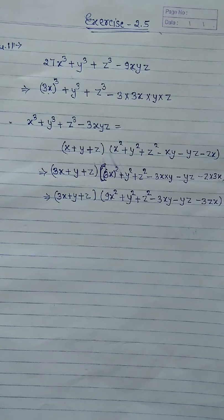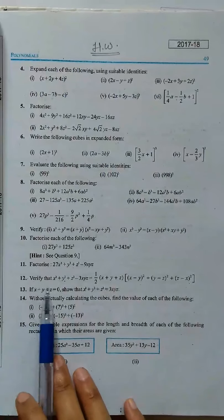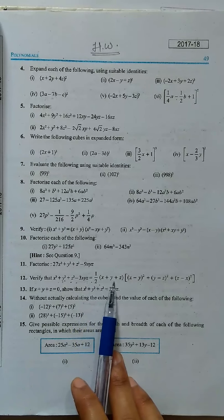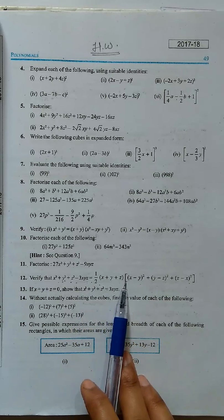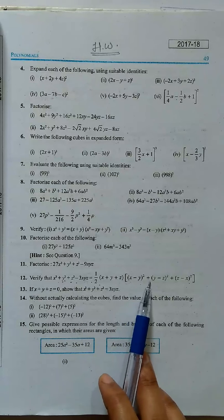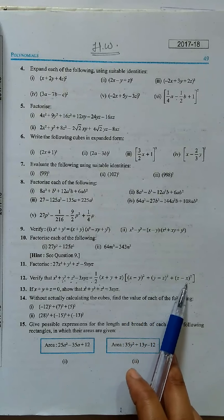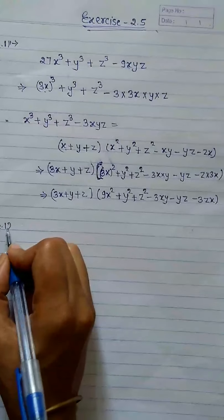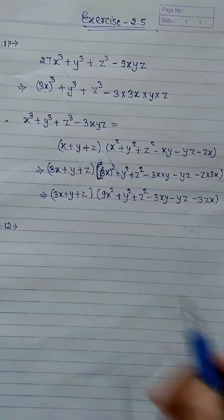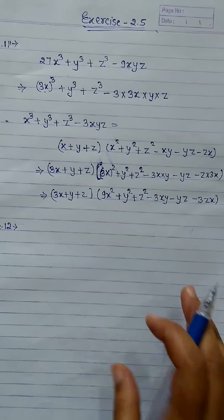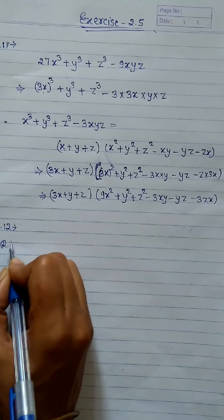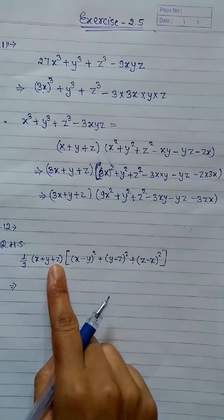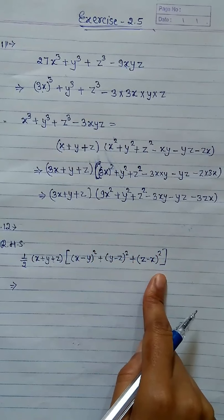Now question number 12: verify that x cube plus y cube plus z cube minus 3xyz equals 1 upon 2 into x plus y plus z into x minus y whole square plus y minus z whole square plus z minus x whole square. Let's start question number 12. Our right hand side is 1 upon 2 into x plus y plus z into (x minus y)² plus (y minus z)² plus (z minus x)².